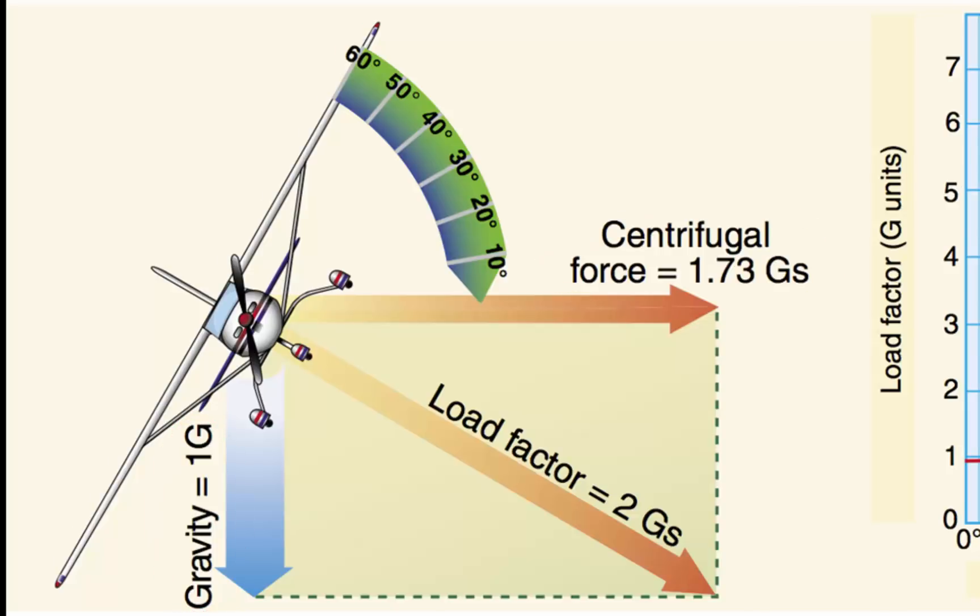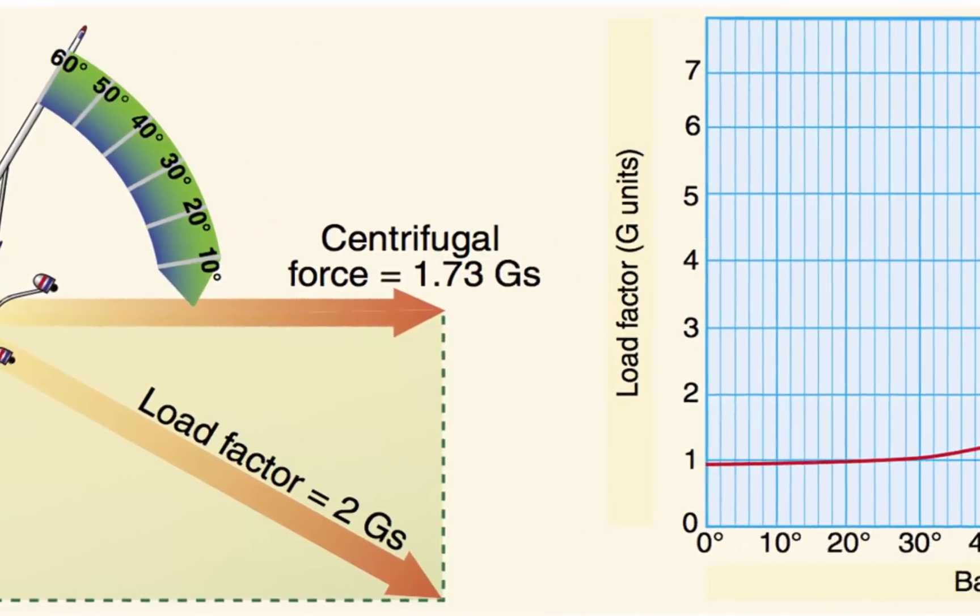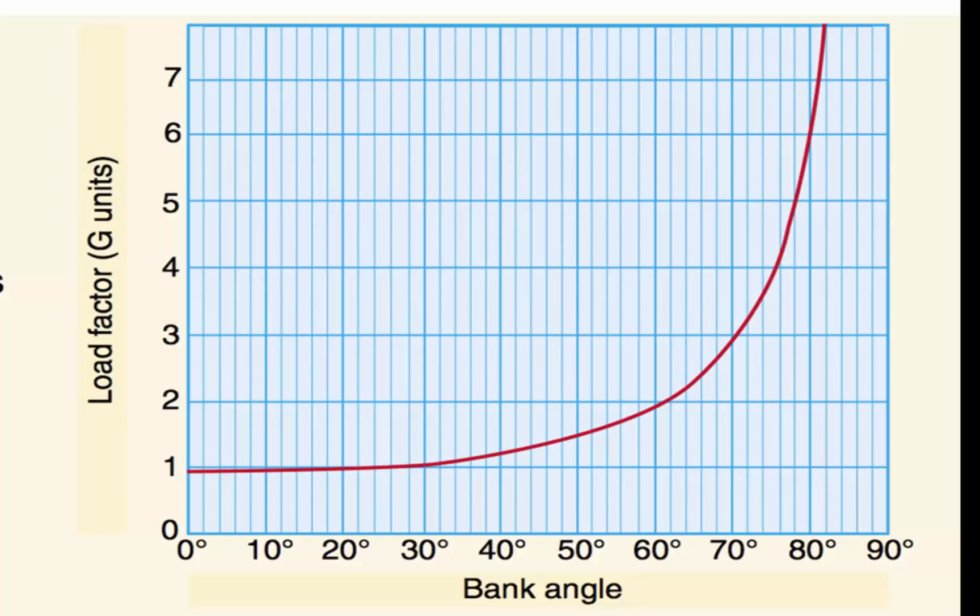To maintain altitude during a turn, the aircraft must sustain the loads shown at the chart on the right. The maximum bank for the average general aviation aircraft is 60 degrees.